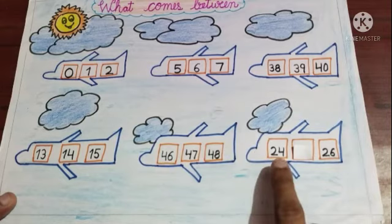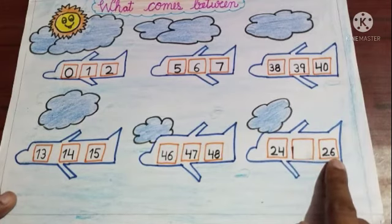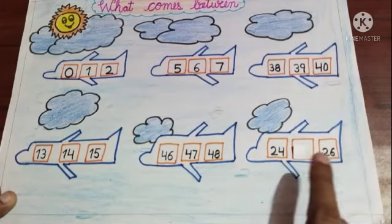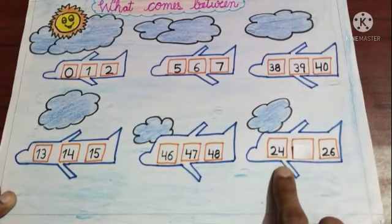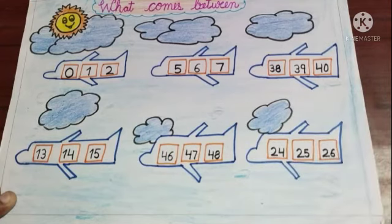And the last is twenty-four and twenty-six. Please tell me which number comes between twenty-four and twenty-six? Yes, number twenty-five.